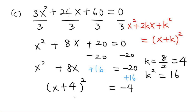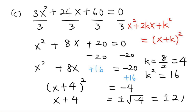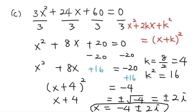Apply the square root method and take plus or minus square root of the right hand side: x plus 4 equals plus or minus square root of negative 4, which is plus or minus 2i. Subtract 4 from both sides, and we have x equals negative 4 plus or minus 2i. Those are the solutions.